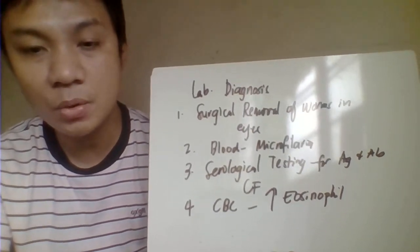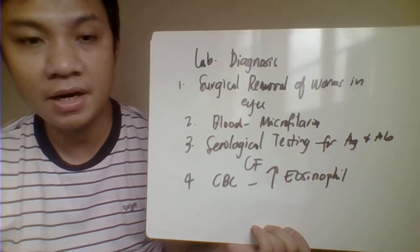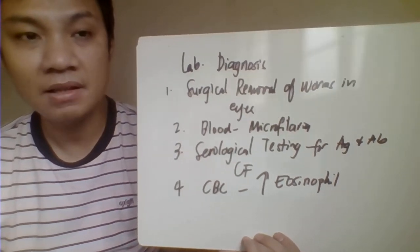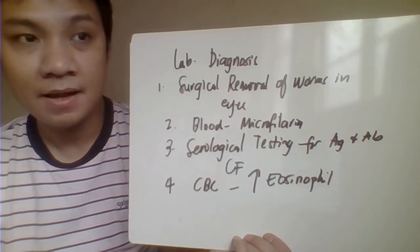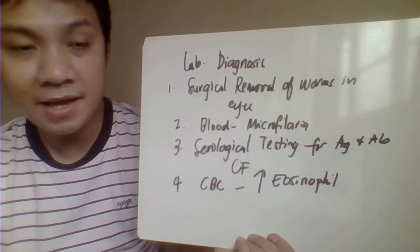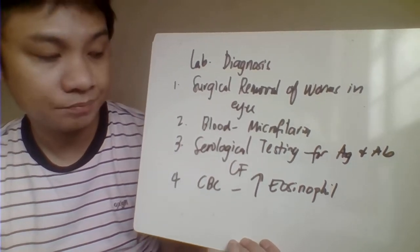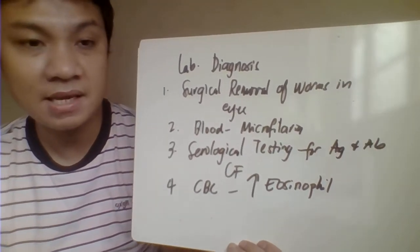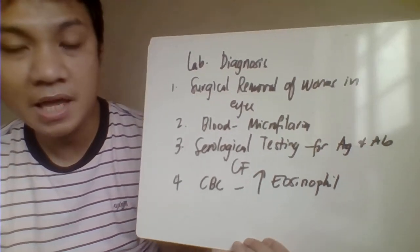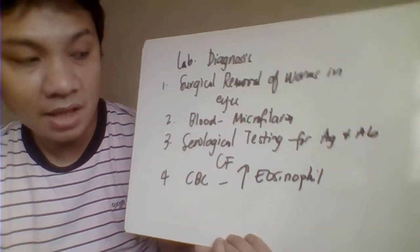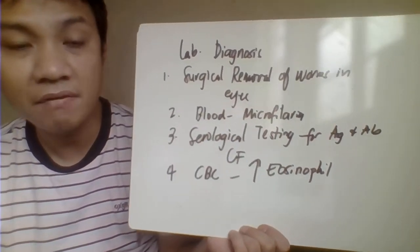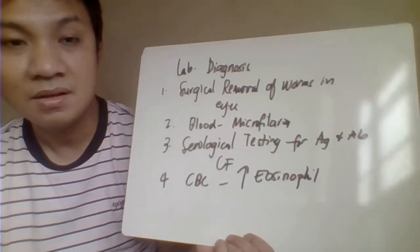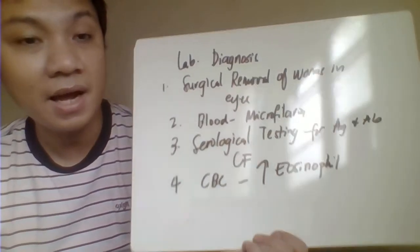For laboratory diagnosis of Loa loa: surgical removal of the worm from the eyes is possible. Blood can also be examined using thick and thin smear, collected during daytime since this species is diurnal. Serological testing helps diagnose the disease through identification of specific antigen-antibody reactions, such as the intradermal test and complement fixation test. CBC will show elevated eosinophil count — eosinophilia — as expected with parasitic infection.